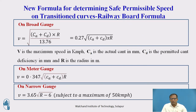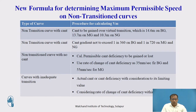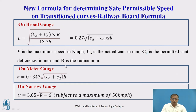The modified equations used now define the permissible speed considering cant deficiency and actual cant provided. For broad gauge, the Railway Board formula is: V = 0.27√((CA + CD) × R), where CA is the actual cant, CD is the cant deficiency, and R is the radius in meters. For meter gauge: V = 0.347√((CA + CD) × R). For narrow gauge: V = 3.65√(R) − 6, subject to a maximum of 50 kmph. These formulas apply when there are no restrictions from transition curves.